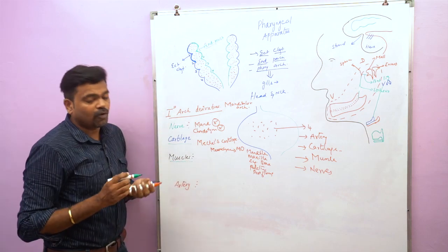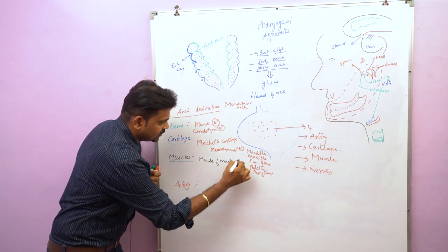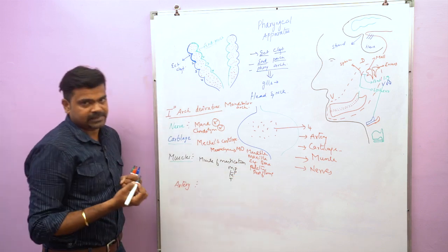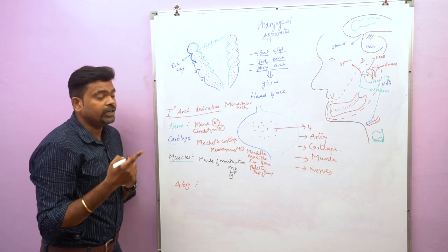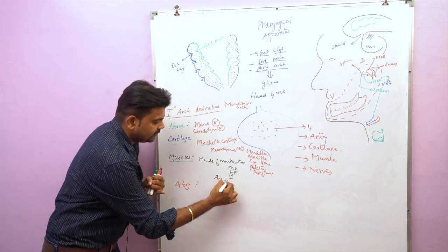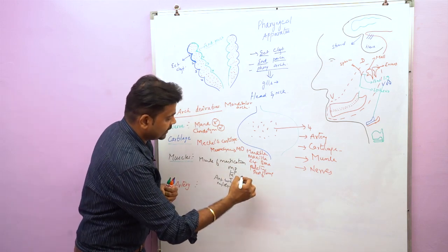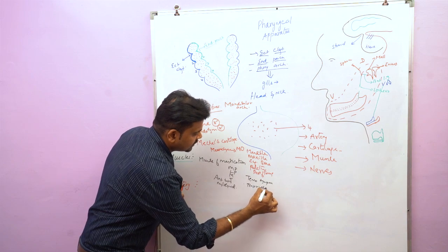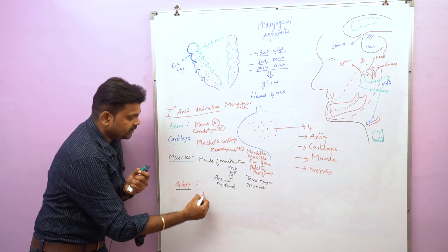The muscles arising from the first pharyngeal arch are the muscles of mastication: medial pterygoid, lateral pterygoid, masseter, and temporalis. The inferior alveolar nerve gives a branch called nerve to mylohyoid, which supplies the anterior belly of the digastric muscle and the mylohyoid muscle. Additional muscles from the first arch include tensor tympani and tensor veli palatini. The artery of the first pharyngeal arch is the maxillary artery.